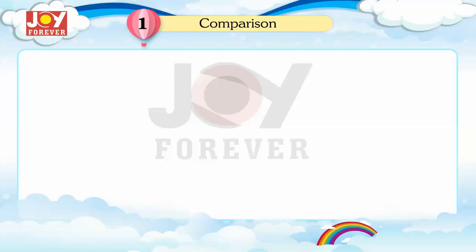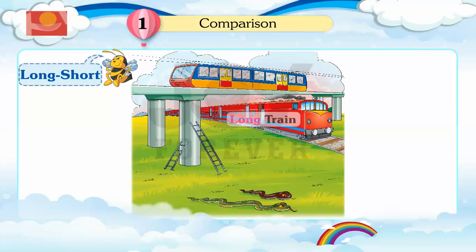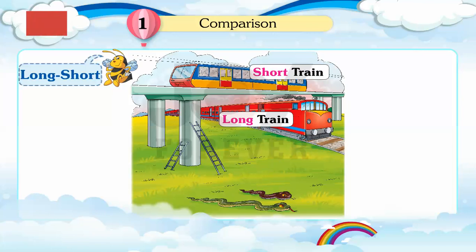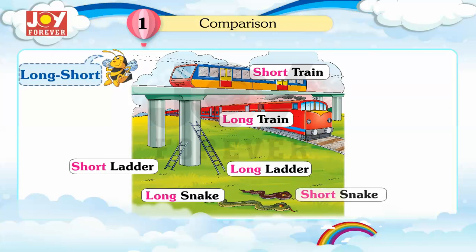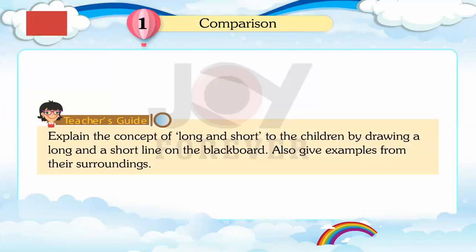Long and short. Long train, short train. Long ladder, short ladder. Long snake, short snake. Teacher's Guide: Explain the concept of long and short to the children by drawing a long and a short line on the blackboard. Also give examples from their surroundings. Practice.